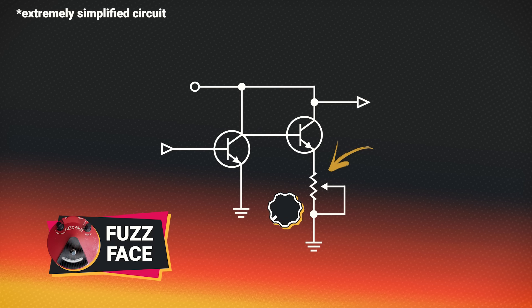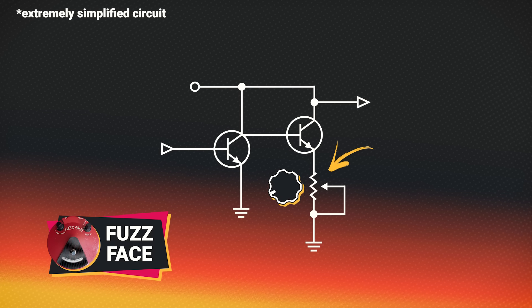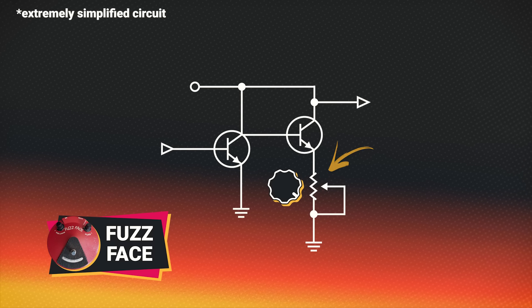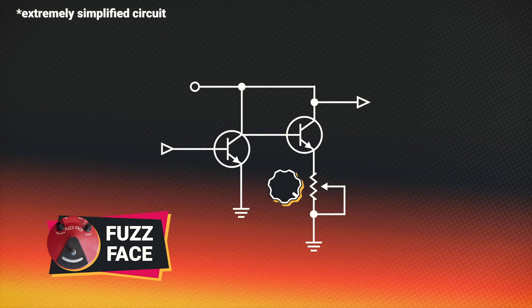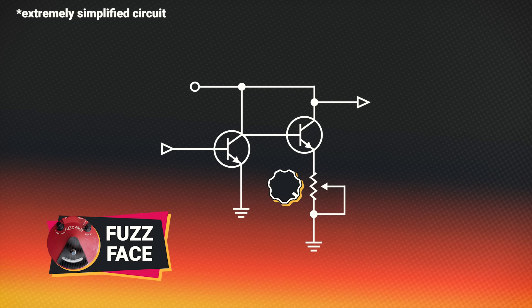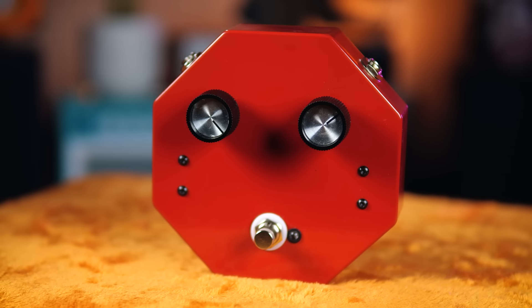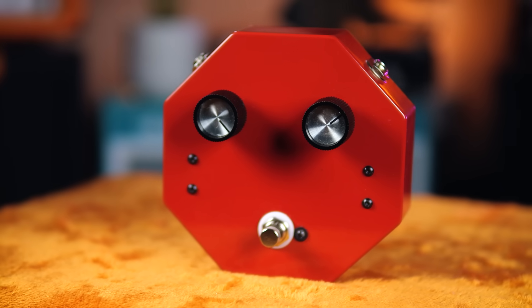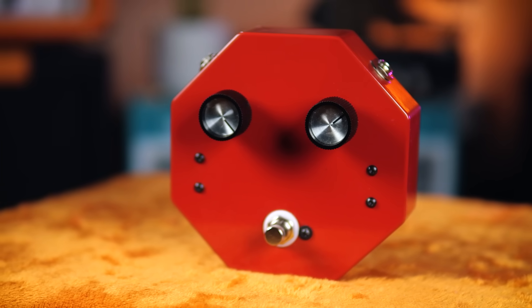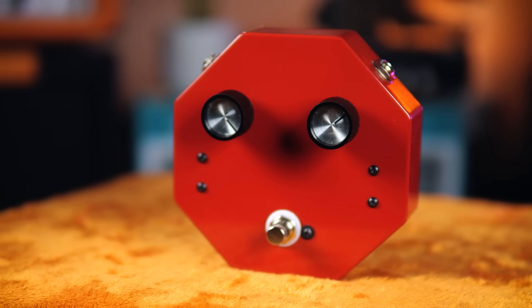The fuzz face gain control adjusts the negative feedback of the whole amplifier circuit, altering how much amplification the transistors are applying. This gives a thick, overdrive-y sound with low signal levels, but a ripping fuzz tone when the gain is turned all the way up.